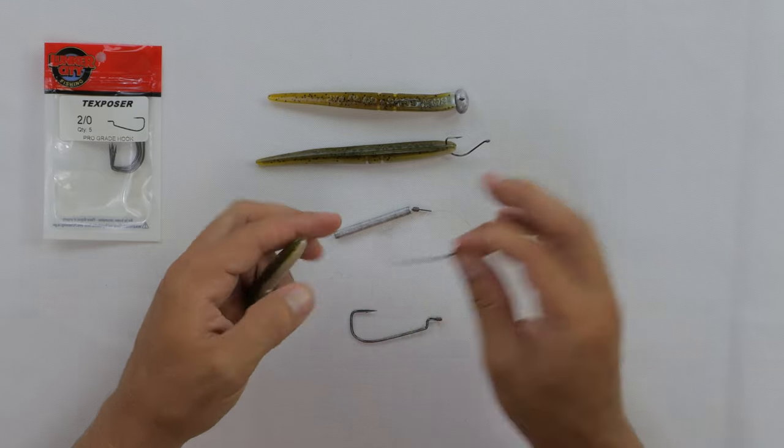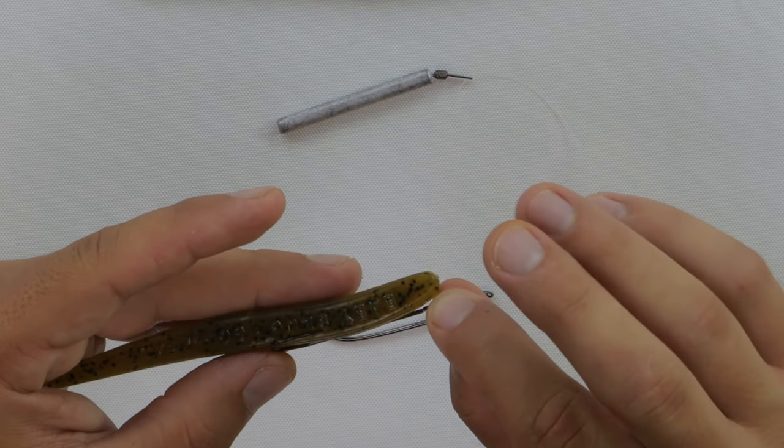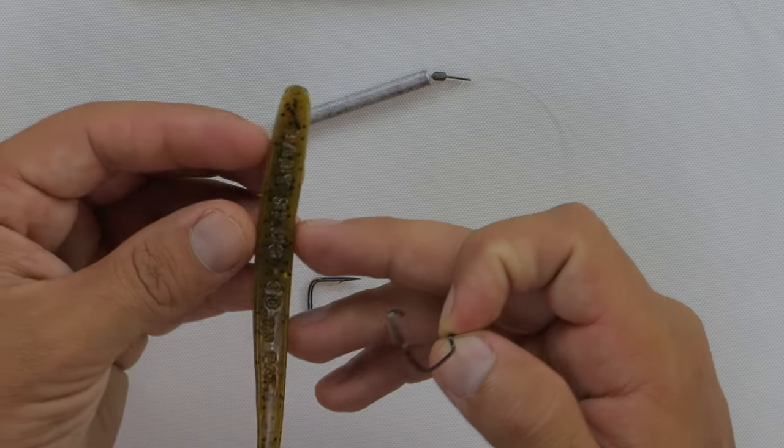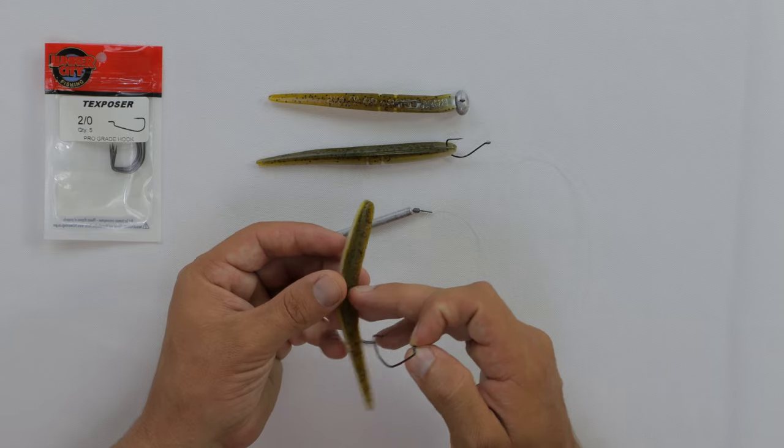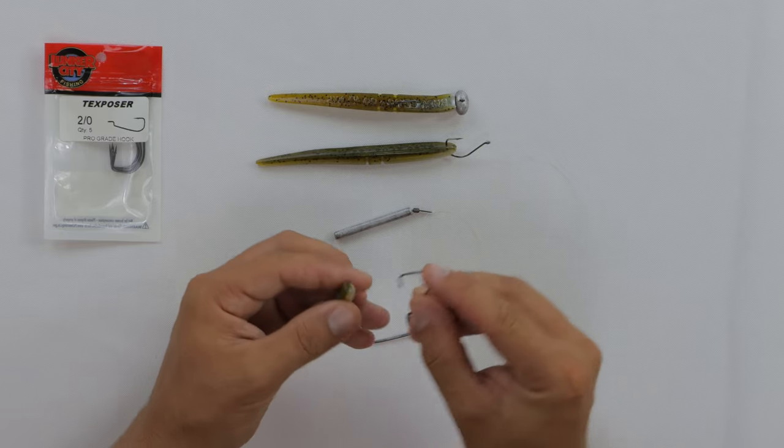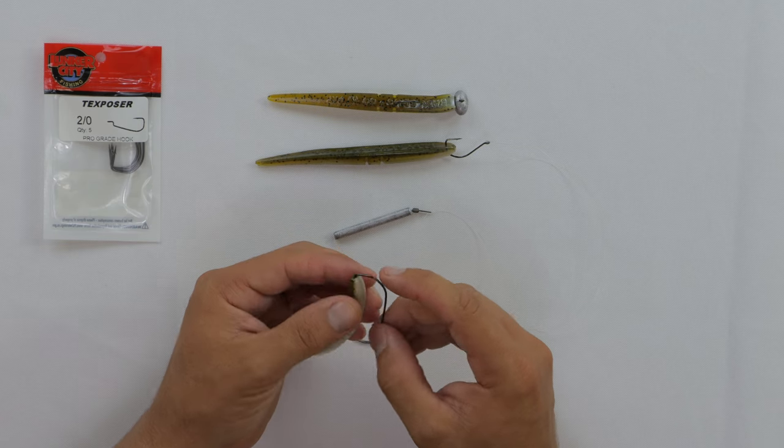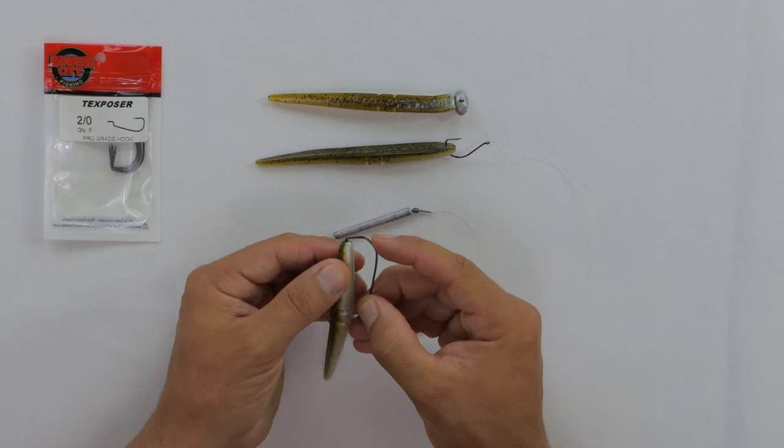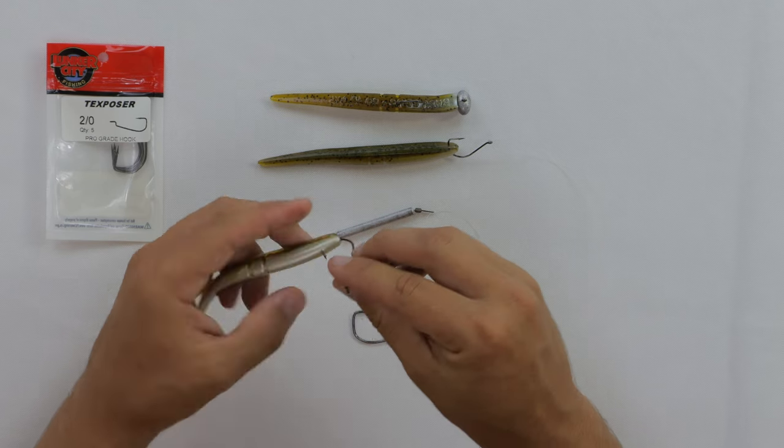So same thing, line up the hook along the side of the body, and you want it to come out. It looks like right about the G in the word Slug at the top of that. Try to get the right angle for you guys so you can see. So right about the G in Slug. So put the hook point into the nose of the body of the bait. You want it to come out. So push it just past the barb.